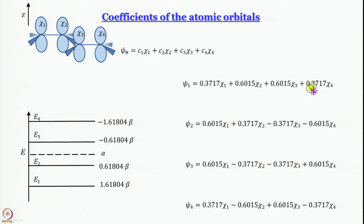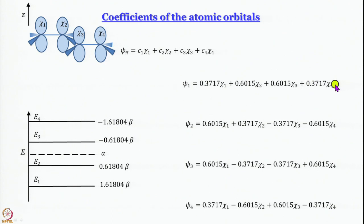Here I will show the results. Labeling energy levels e1 through e4 from lowest to highest — do not forget that α + 1.61804β really means a negative energy because β itself is negative. These are the coefficients obtained. Looking at ψ1: all signs are plus, and the coefficients are not equal. There is a smaller contribution from χ1, greater from χ2, equally greater from χ3, and smaller from χ4.